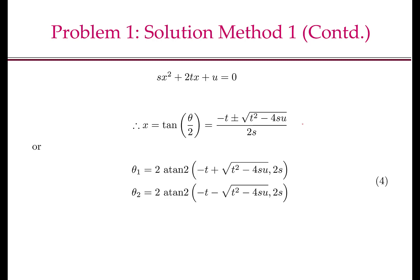And recall that this x is tan(theta/2), which is of the form y by x. So I will have two solutions to this problem. The two solutions theta 1 and theta 2 are 2 times atan2 of (minus t plus square root of t squared minus 4su, 2s) and the other one has the minus sign. Now this is one method for solving the first problem.